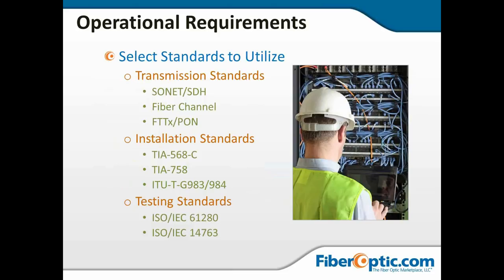Next we select standards. We need transmission standards for the protocols — Sonet or SDH, fiber channel, passive optical networks. For installation standards in the United States, we look at EIA-TIA-568C and 758. For international or overseas operations, we look at ITU-T G.983 and G.984. For testing standards, IEC 61280 or 14763 are two of the possible testing standards for networks in the field.